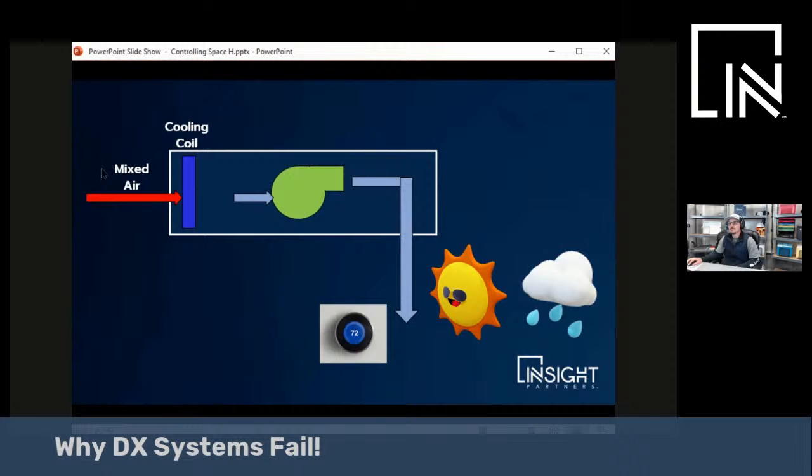You have your mixed air coming in here, let's say 20% outdoor air, the rest is return, coming through your cooling coil, going through your supply fan, and blowing down into your space.